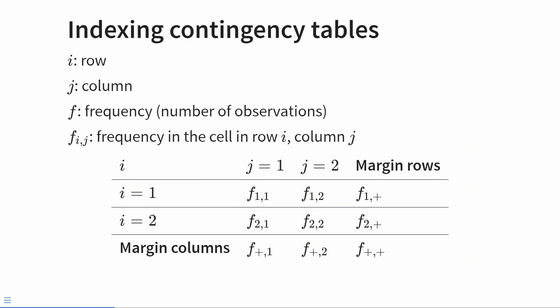We can calculate the marginal total across the rows, found in the row margins: the first marginal total sums across the first row, the second across the second row. We also have marginal totals for the columns at the bottom of the table, where the first marginal total sums across column 1 and the second across column 2. And we get an overall total, f sub plus,plus, which is the total number of observations in our dataset.